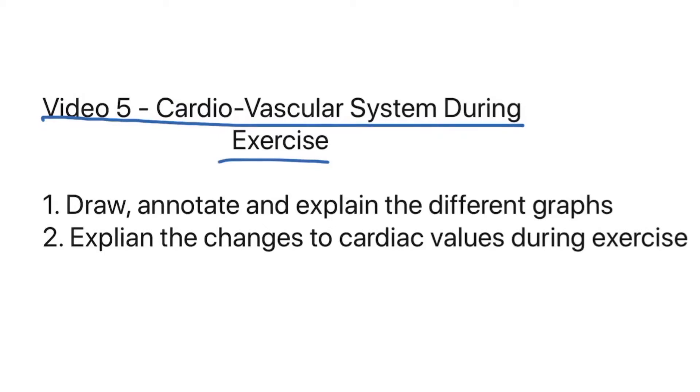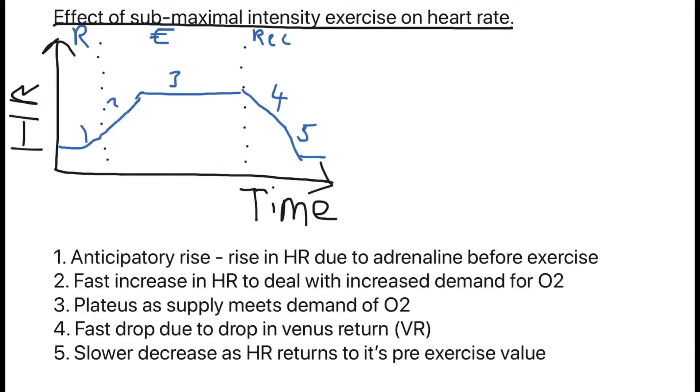Hello everyone and welcome to the fifth video in the anatomy and physiology series of your OCR A-level PE specification. Today we're going to be looking at the cardiovascular system during exercise, a little bit different to the cardiovascular system during rest. What you need to know now is the ability to draw, annotate and explain the different graphs of the cardiovascular system and explain the changes to cardiac values during exercise such as heart rate, stroke volume and cardiac output.